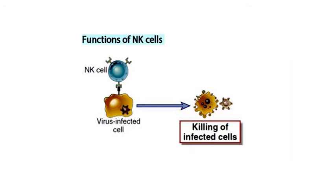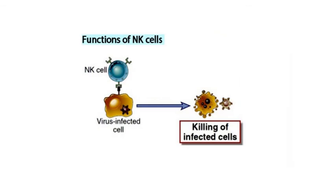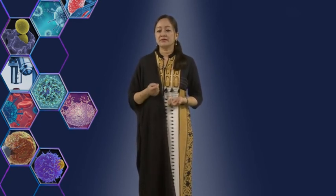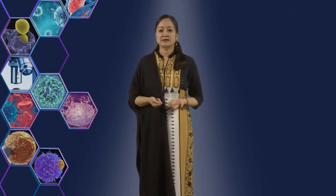NK cells are the first cells to fight against viral infections. Interferon alpha and interferon beta are also produced by macrophages, monocytes, and fibroblasts. Interferon alpha and interferon beta can induce an antiviral state by binding to their receptors.